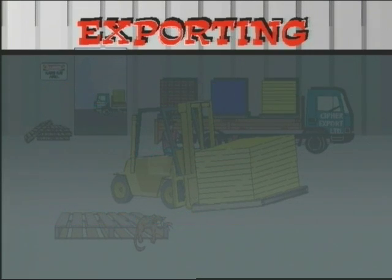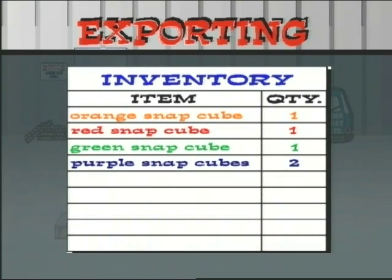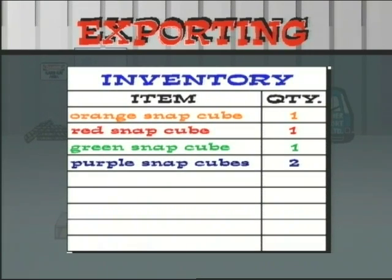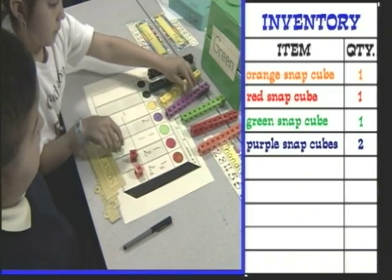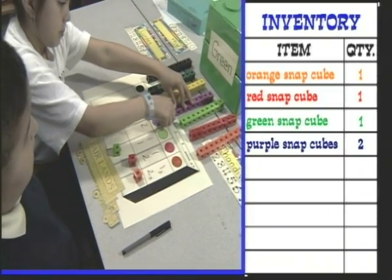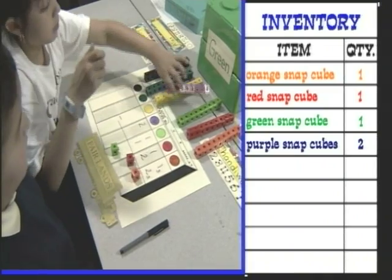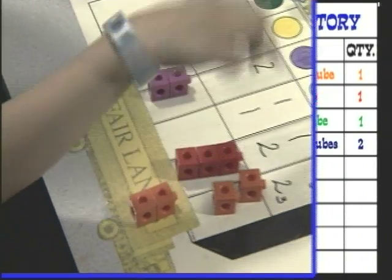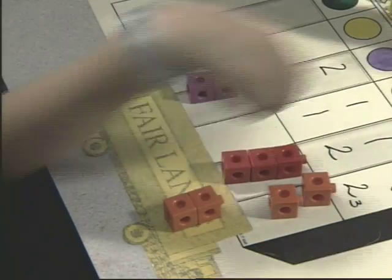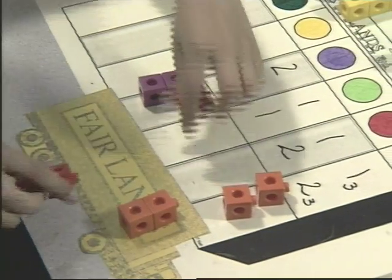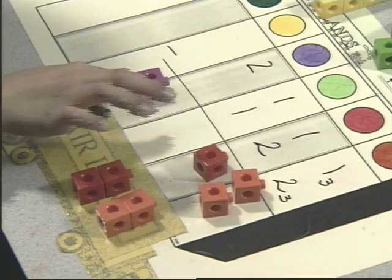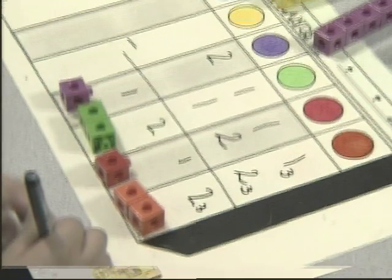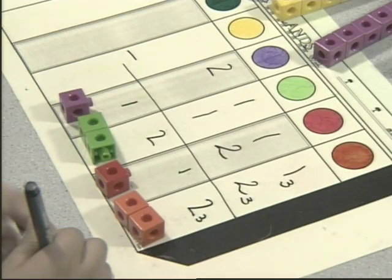When exporting, students first stock Fairlands from an inventory list — they put a given quantity of Fairlands blocks on a Fairlands game board. They then remove a given quantity of blocks to load a Fairlands truck to match an invoice written on the truck. The blocks that are left in Fairlands, that is on the Fairlands game board, are the result.